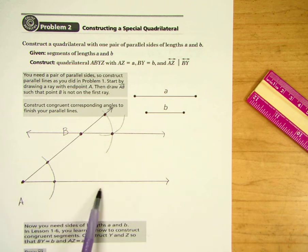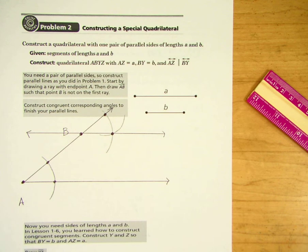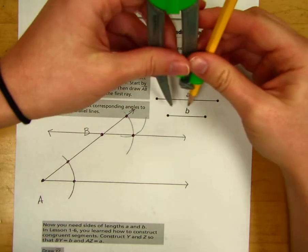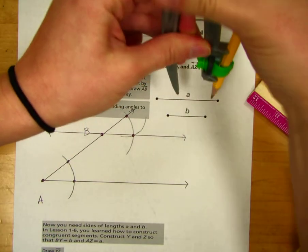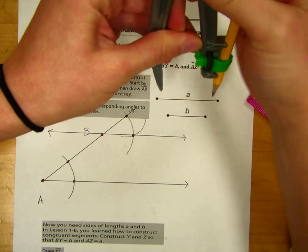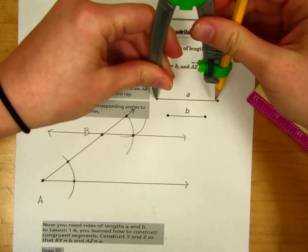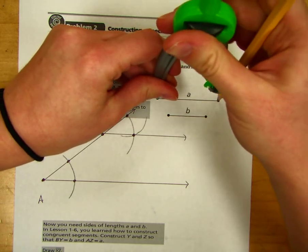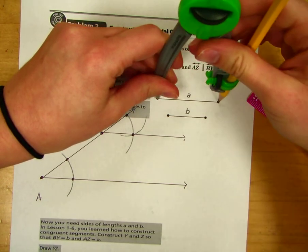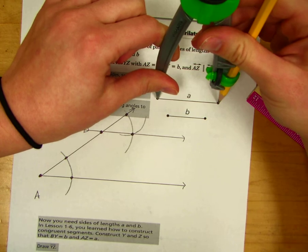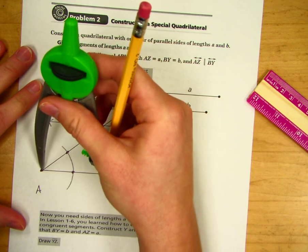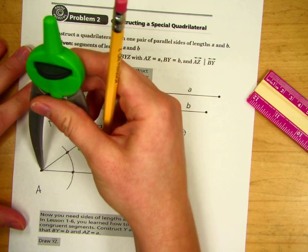We have to have AZ equal to A. We'll take our compass and measure the distance, the length of line segment A up here. You're going to take your point on one side and take your pencil tip to the other. That's the distance of one segment A. Put your tip on A and mark it here on this ray.